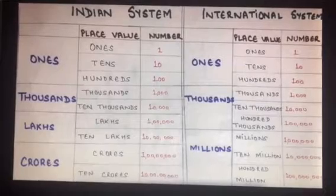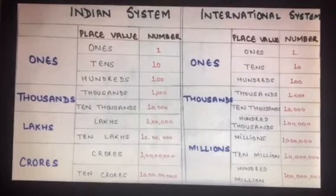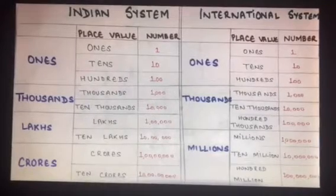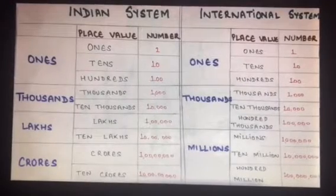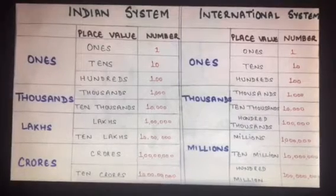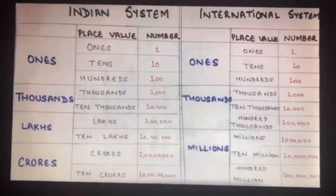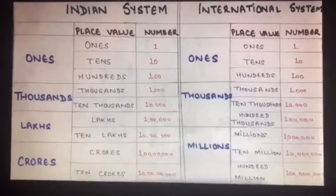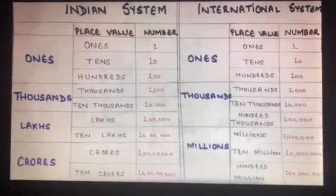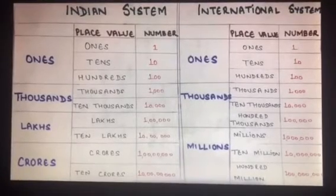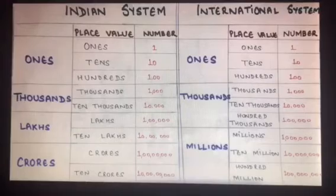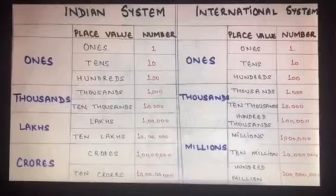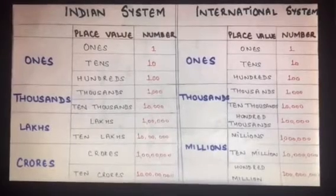Firstly, we will differentiate between the Indian number system and the international number system. Students, you should have the knowledge of both number systems. For example, if you want to buy a house and the price is quoted in million, then you must know the international number system. Both number systems are exactly the same till the 10,000 place, but then the Indian number system changes its name after every two digits and the international number system changes its place after every three digits.